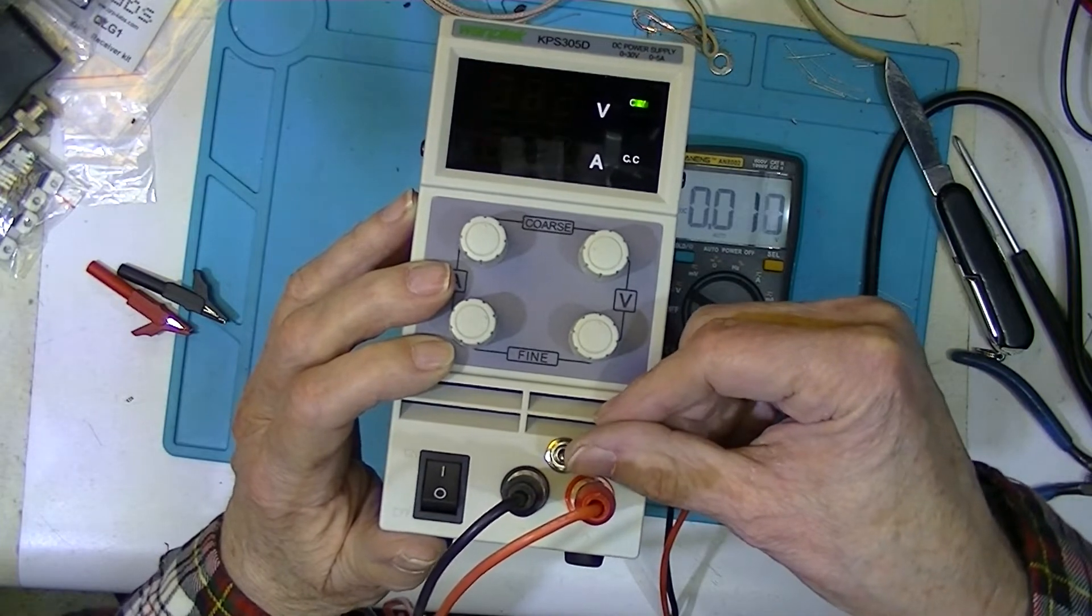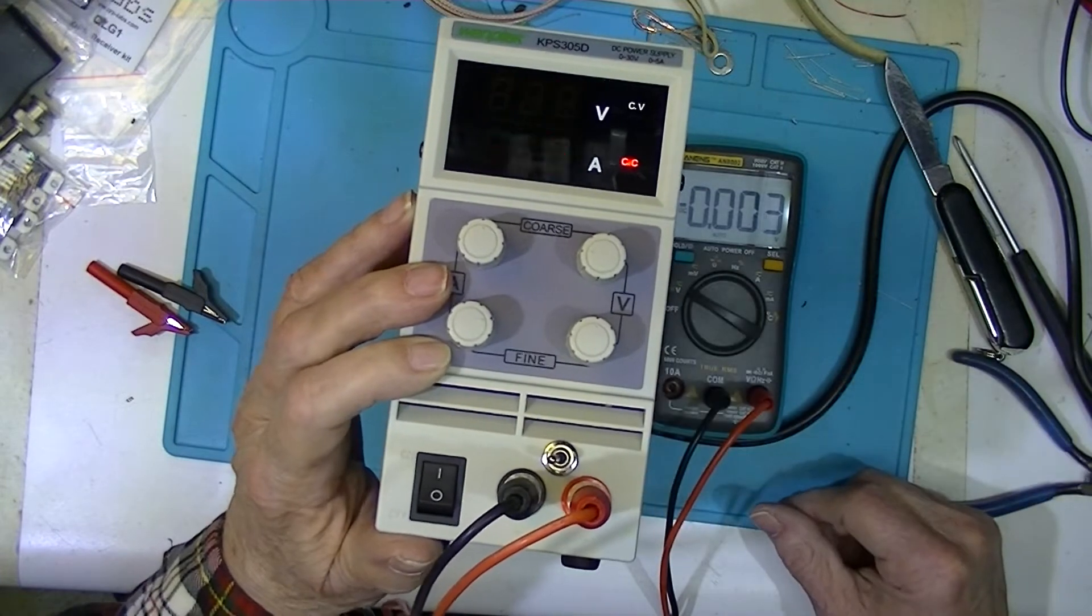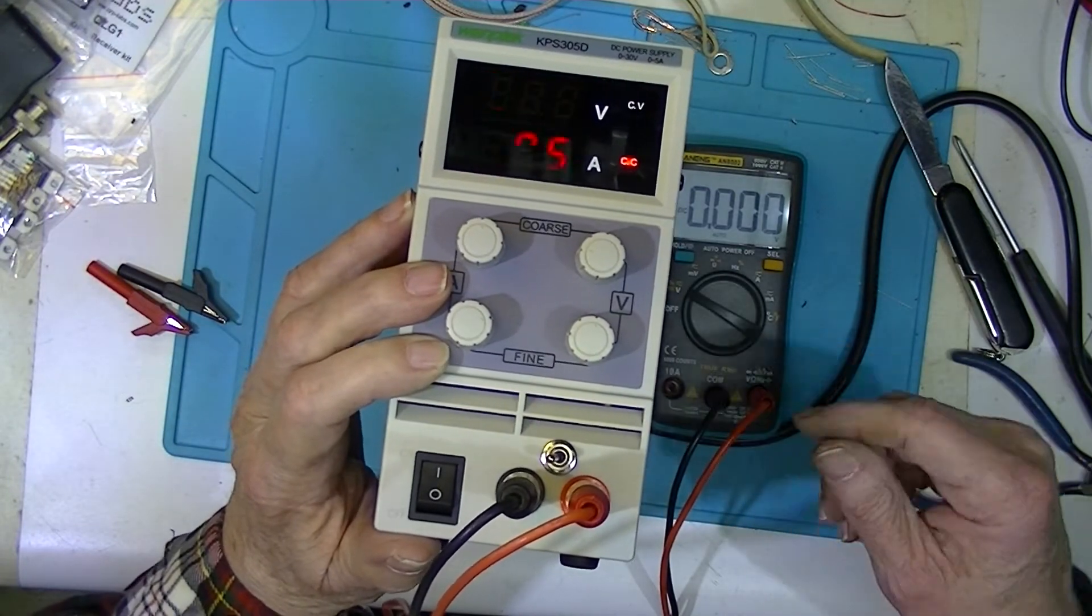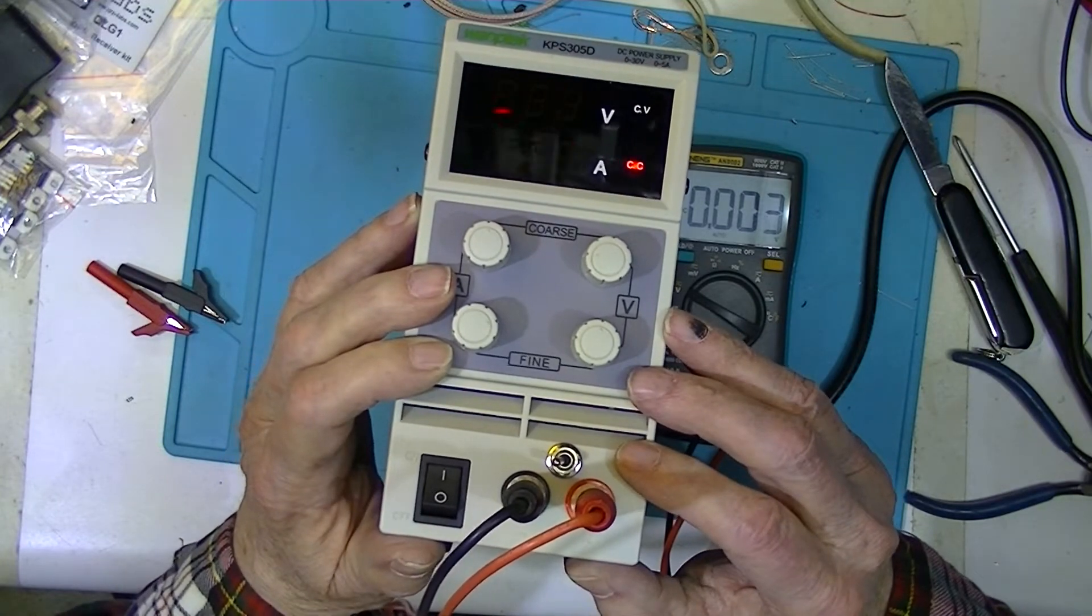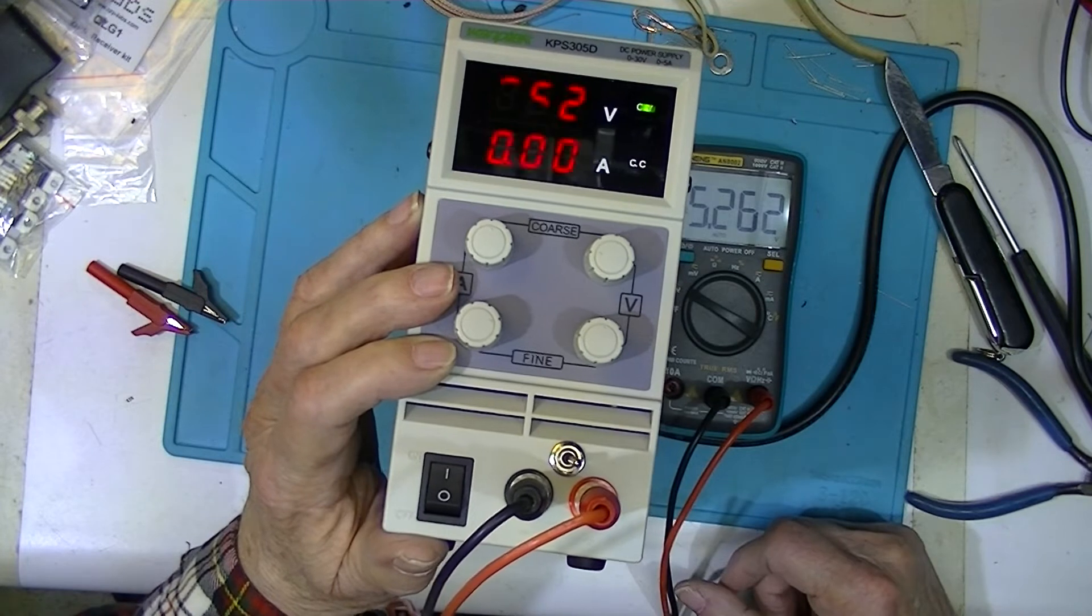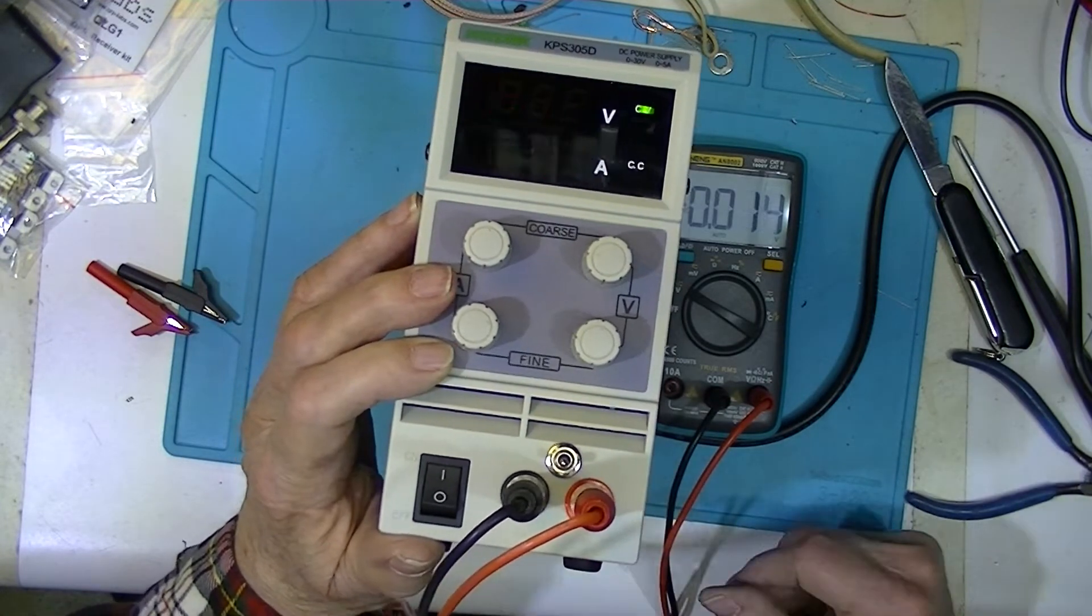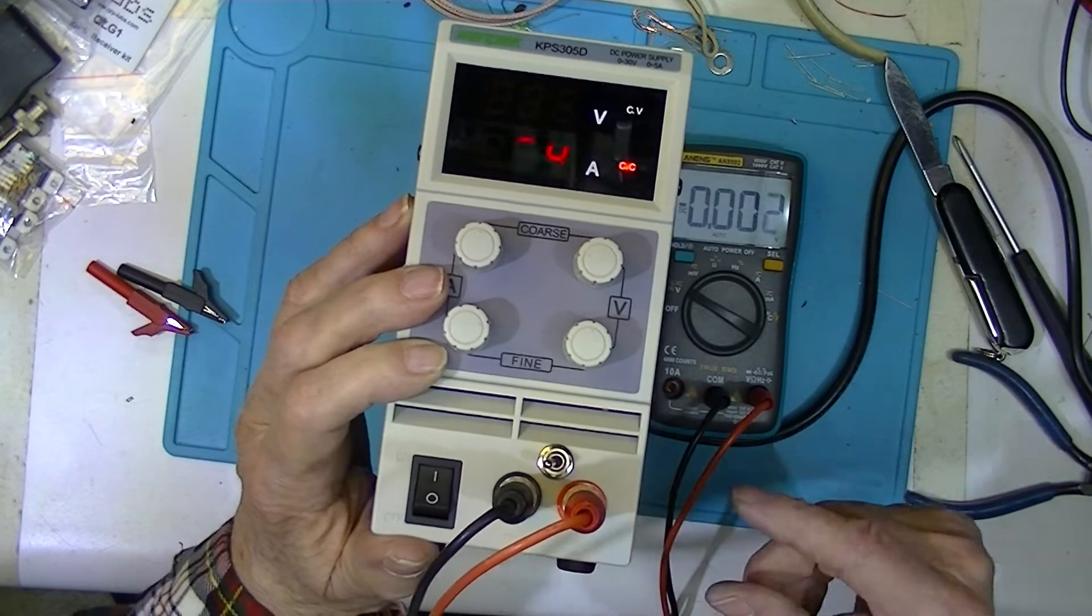Now if I want to see what the current set is, I don't need to short the leads. I can just do this. And I see it's shorted out at 1.95 amp. Load off. Load shorted.